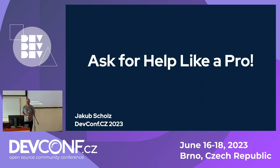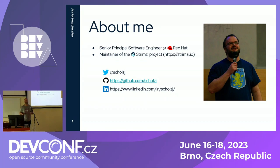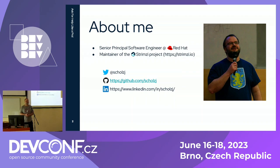Welcome everyone to my talk about asking for help, and thanks for sticking here for the last day afternoon. My name is Jakub Scholz. I work as an engineer at Red Hat and I'm also a maintainer of the community called Strimzi, which is a Cloud Native Computing Foundation project about running Apache Kafka on Kubernetes. As many of us, I have experience with asking for help from both sides — on the Strimzi part I'm often the go-to guy, but in the Kafka or Kubernetes community I'm the one asking others. I see a lot of inefficiencies in how this works, so I decided to give this talk to improve it a bit.